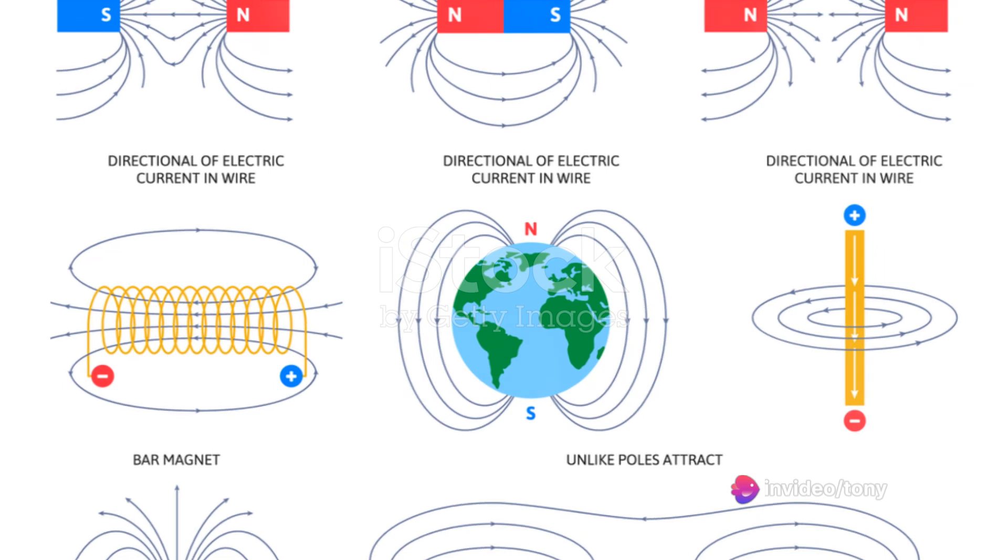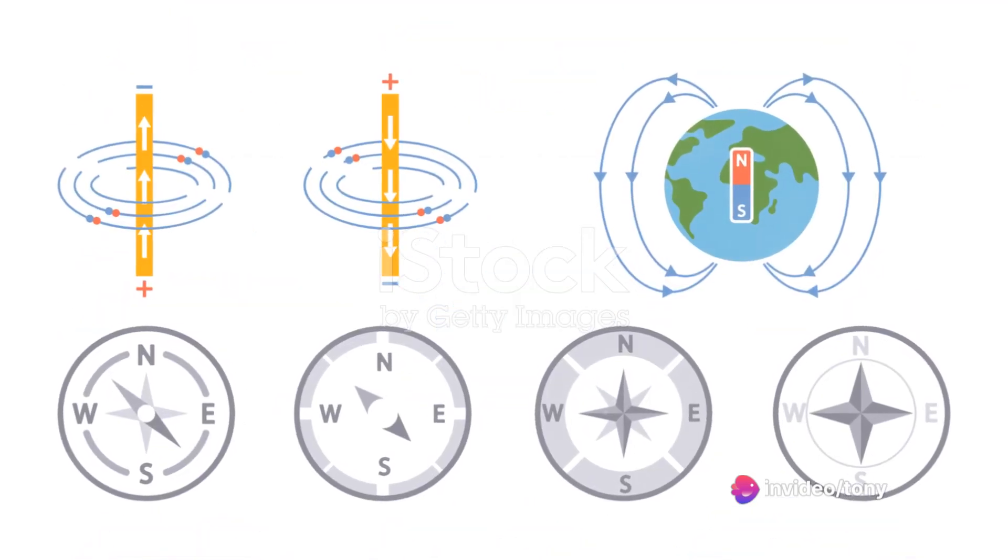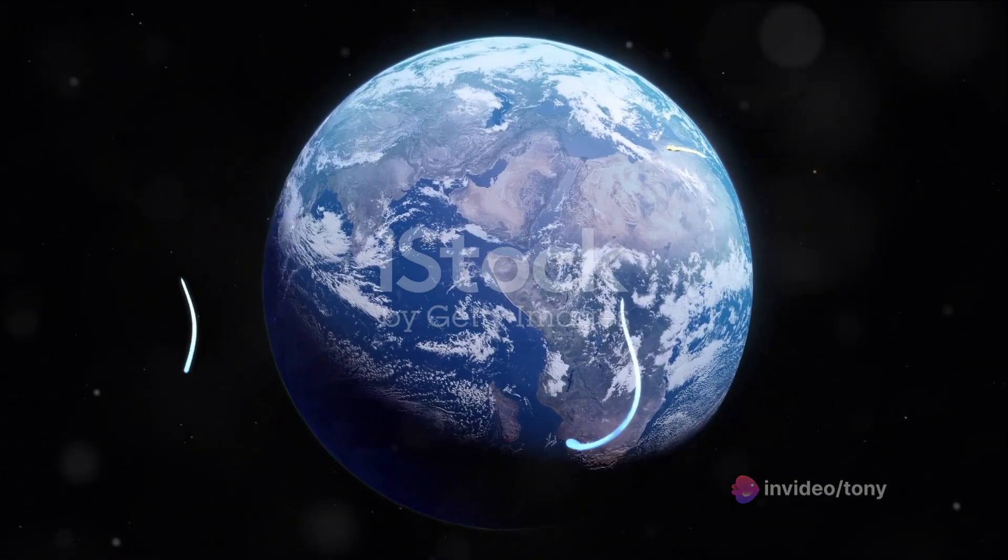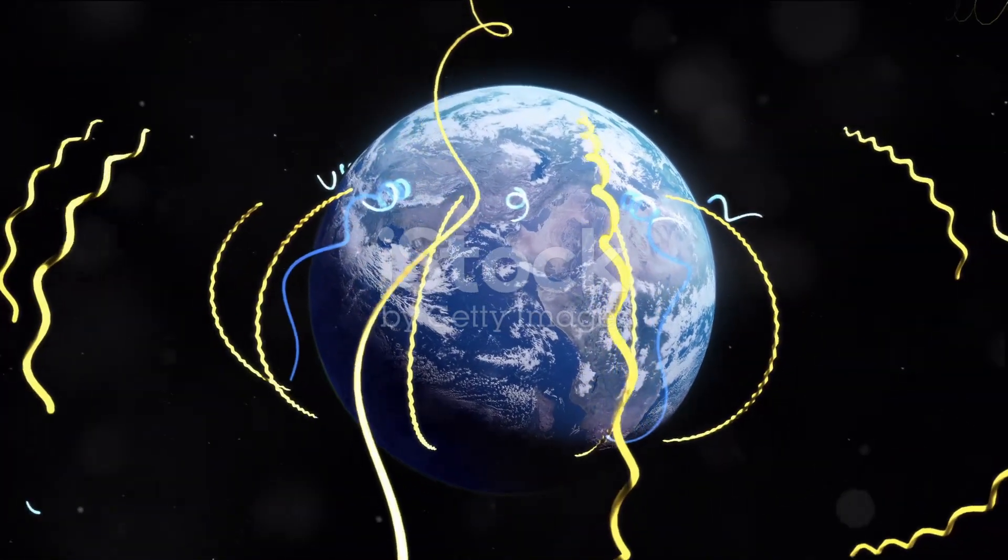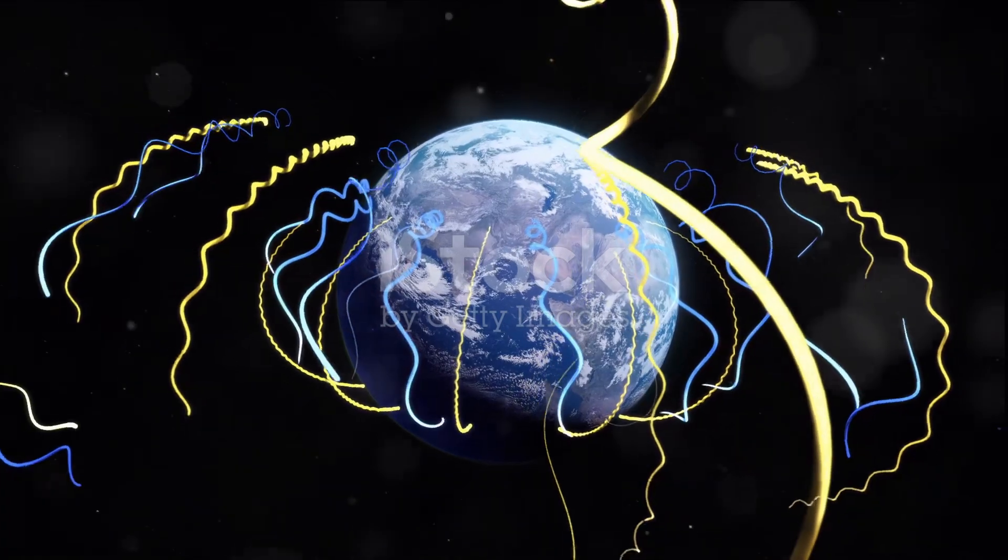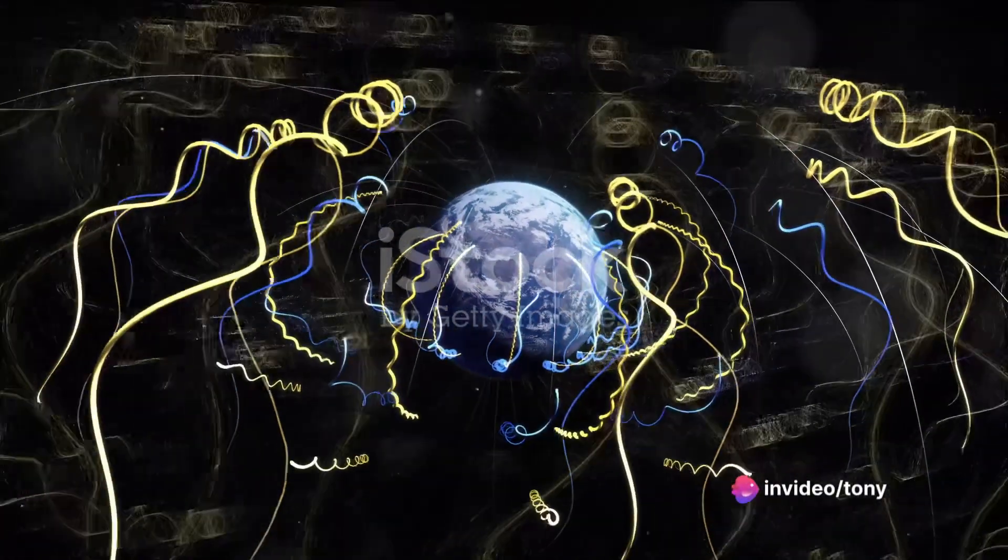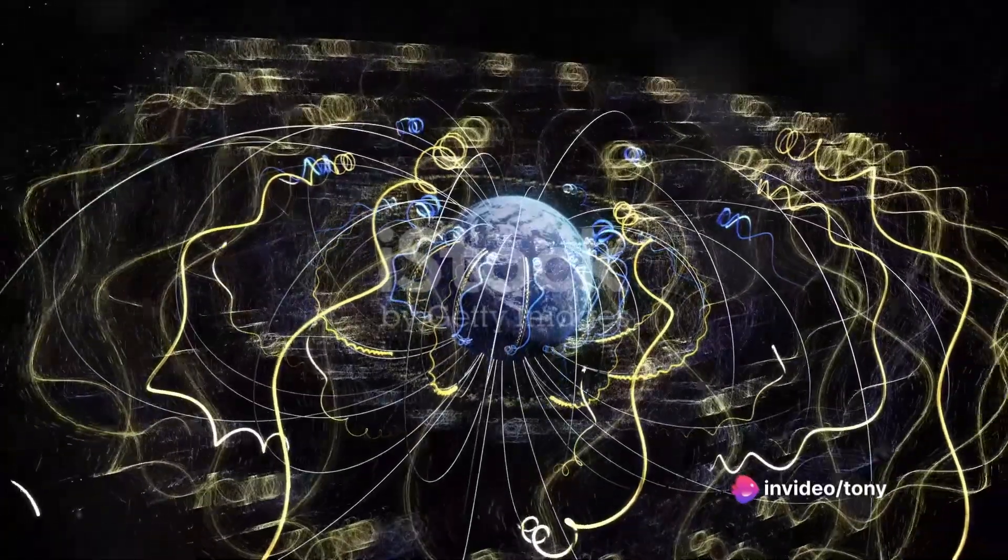First, grasp this: Earth behaves like a colossal magnet. Imagine a bar magnet running through the center of the Earth from the North Pole to the South Pole. This imaginary magnet is what we refer to as the Earth's magnetic field. The field is invisible, yet it's responsible for the direction your compass needle points when you're lost in the woods.